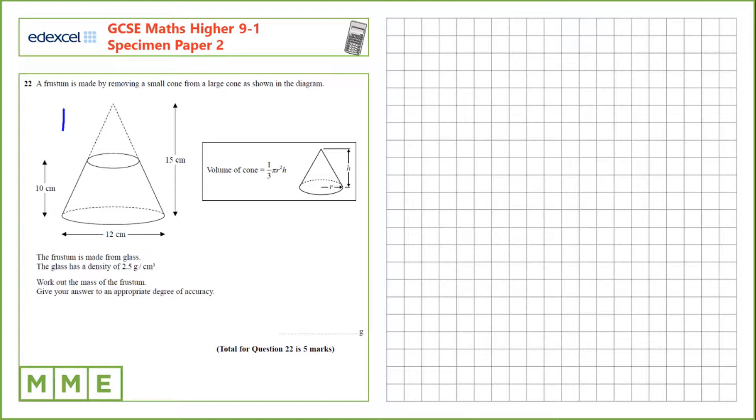So the small cone here has to have a height of 5 centimeters since it's 15 take 10. Let's figure out the volume of both cones and then we'll know the volume of the frustum. From there we can use that to calculate the actual mass. For this we need to know the radius of the small cone.